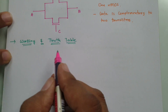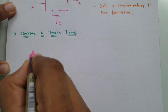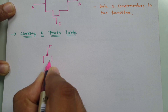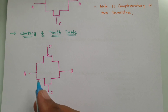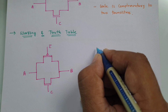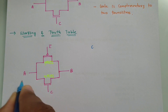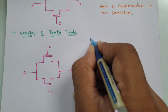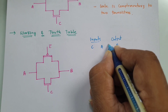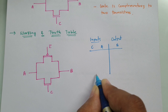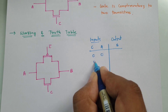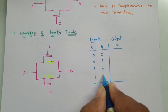To explain the working of CMOS transmission gate as a tri-state buffer, I need to redraw the circuit. In this structure we have PMOS here and NMOS here. We have input C, which is the control signal, and input A, and output B. As there are two inputs, there are a total of four combinations: 00, 01, 10, and 11.